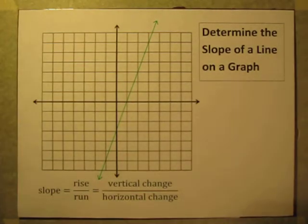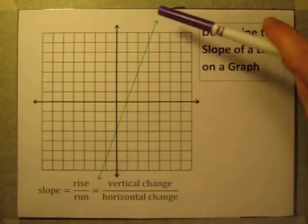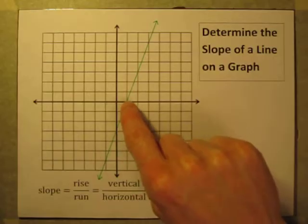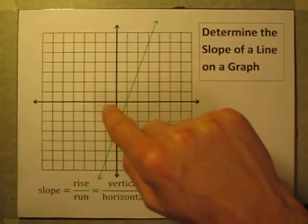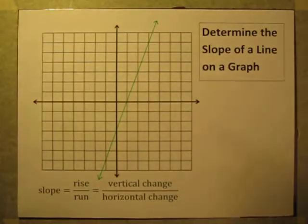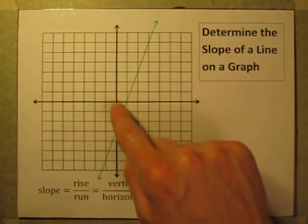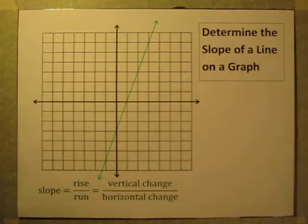This video is all about determining the slope of a line on a graph. The slope is a way that we can describe how steep a line is — how quickly it's rising. For every one step we take to the right, how many steps up are we going? If it's a really steep line, we take one step to the right and many steps upward. If it's a gently sloping line, we take many steps to the right before going up one.